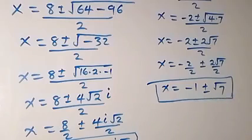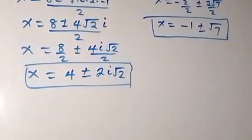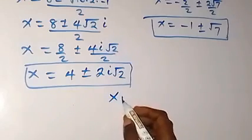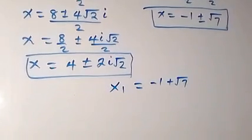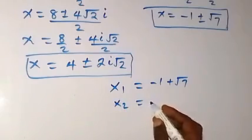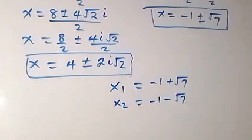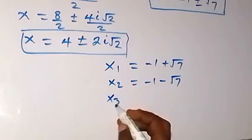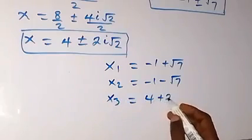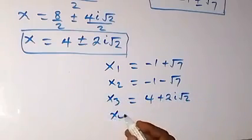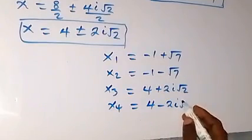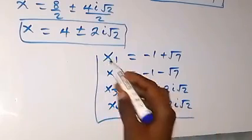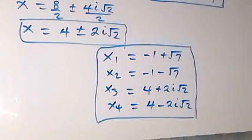We can conclude that we have four solutions: x₁ = −1 + √7, x₂ = −1 − √7, x₃ = 4 + 2i√2, and x₄ = 4 − 2i√2. So in this given problem we have two real and two complex solutions.